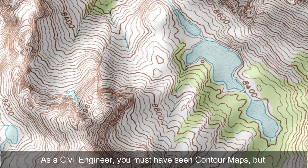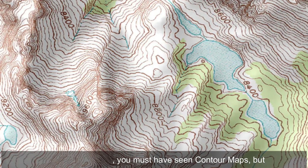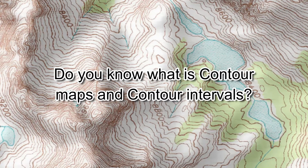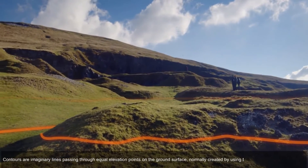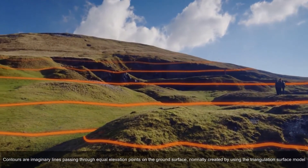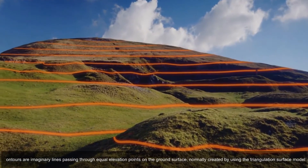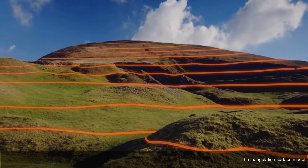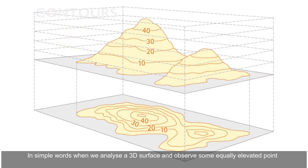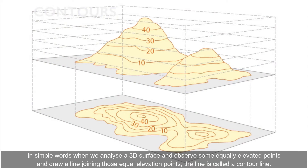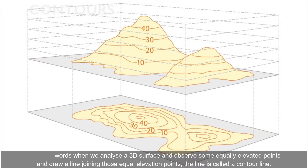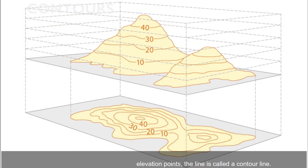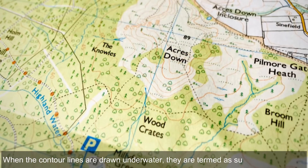As a civil engineer you must have seen contour maps, but do you know what contour maps and contour intervals are? Contours are imaginary lines passing through equal elevation points on the ground surface, normally created using the triangulation surface model. In simple words, when we analyze a 3D surface and observe equally elevated points and draw a line joining those points, the line is called a contour line.